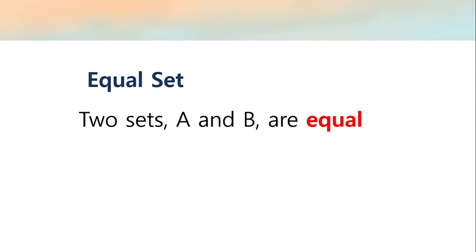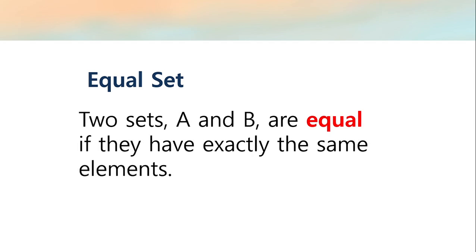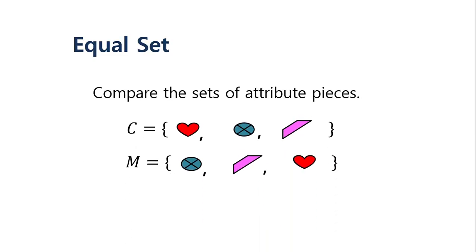Two sets, A and B, are said to be equal if they have exactly the same elements. Here is an example: we have sets C and M that have elements heart, circle, and trapezoid. Set M has the same elements, though listed in a different order. Still, they have the same or equal set.